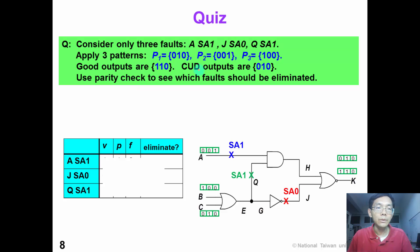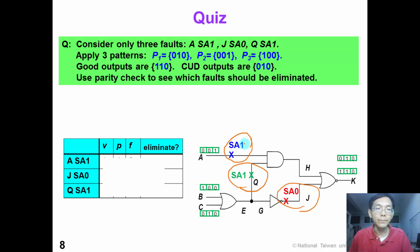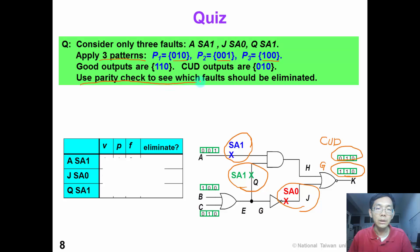Now it's time for a quiz. Consider this simple circuit with only 3 faults: input A stuck-at-1, J stuck-at-0, and Q stuck-at-1. We apply 3 test patterns: (0,1,0), (0,0,1), and (1,0,0). The good outputs are 1, 1, 0, and the observed CUT output is 0, 1, 0. Please use the parity check technique to determine which of these 3 faults should be eliminated. Please pause the video and do this exercise.